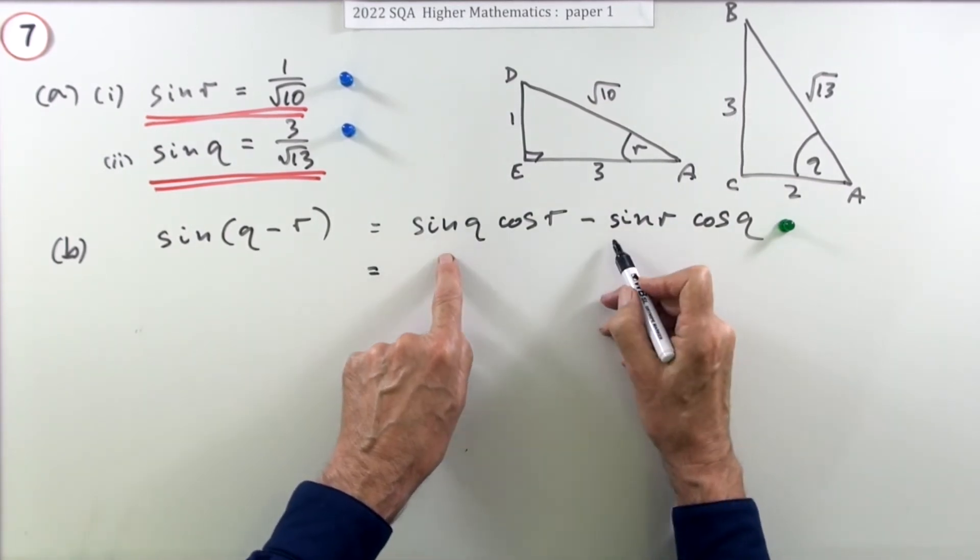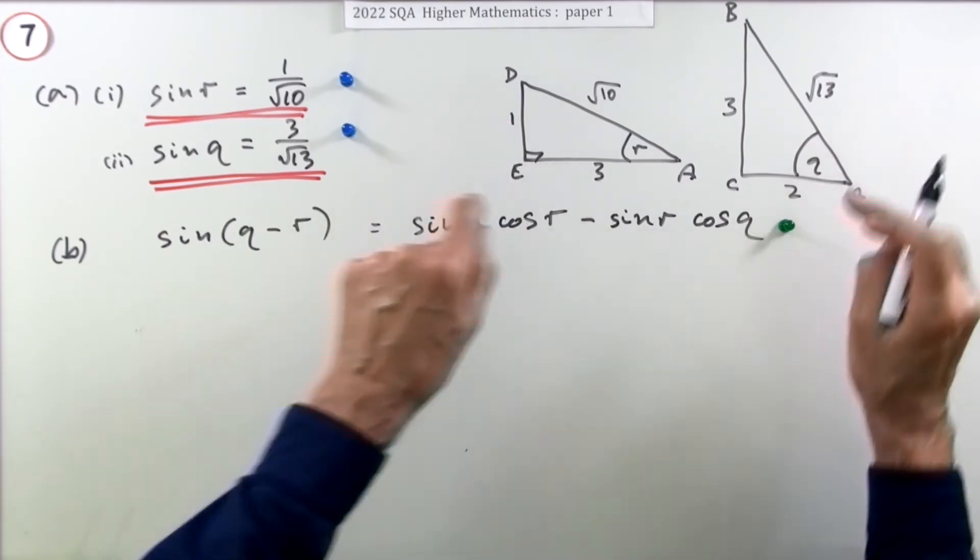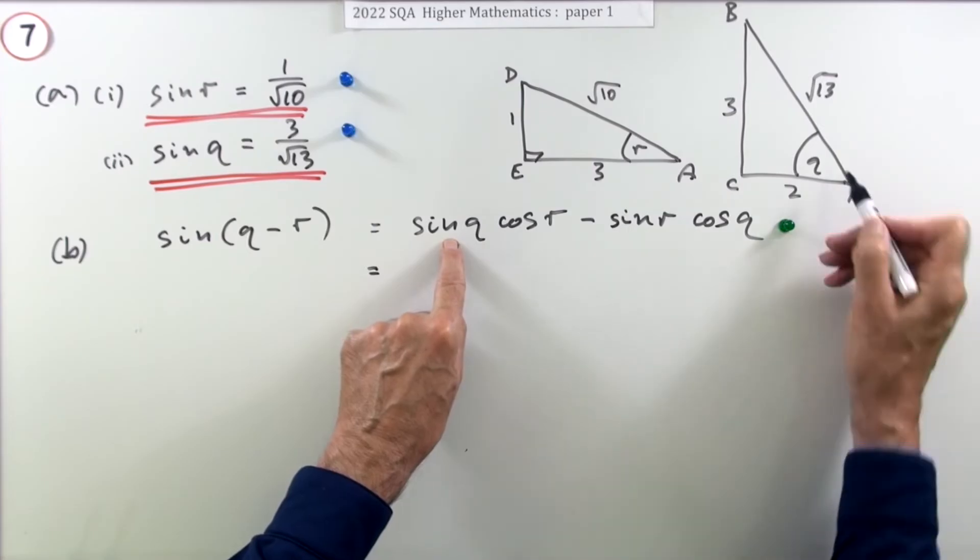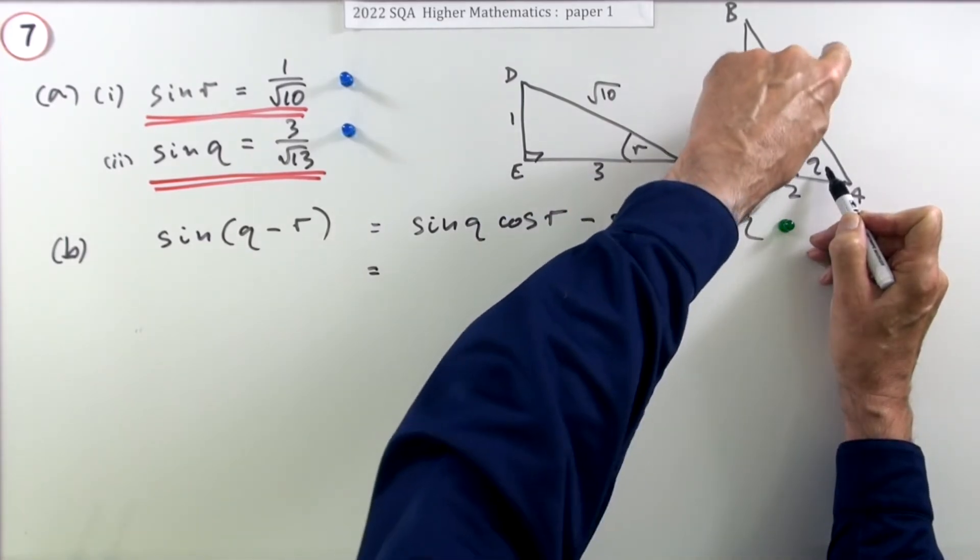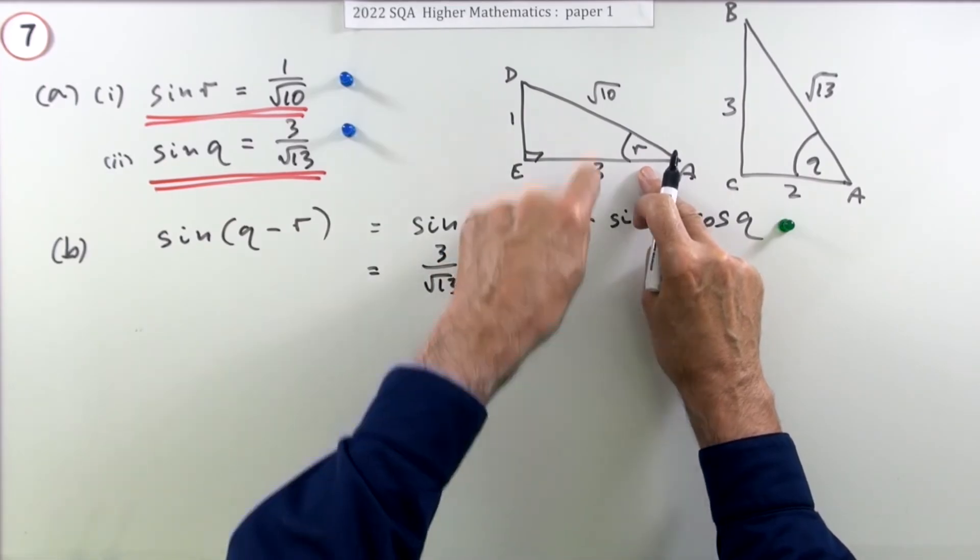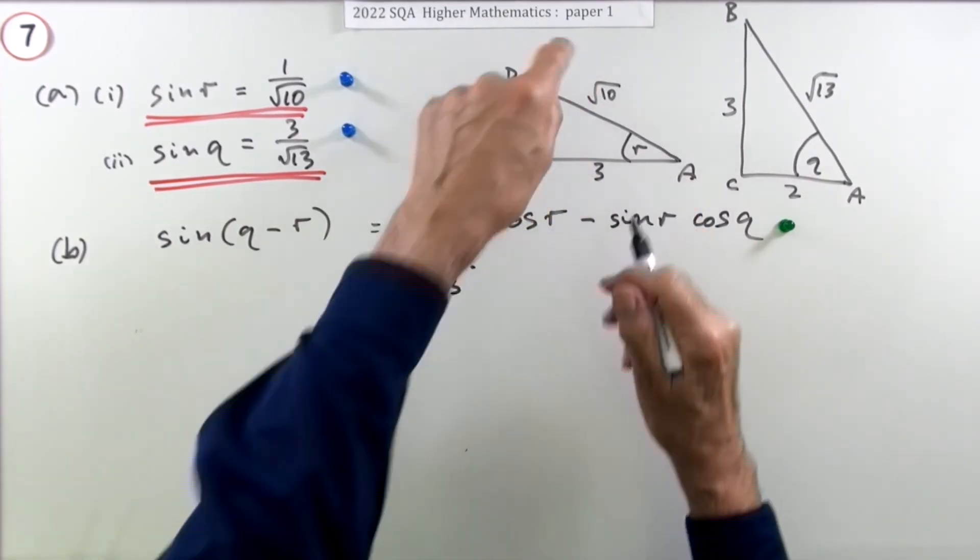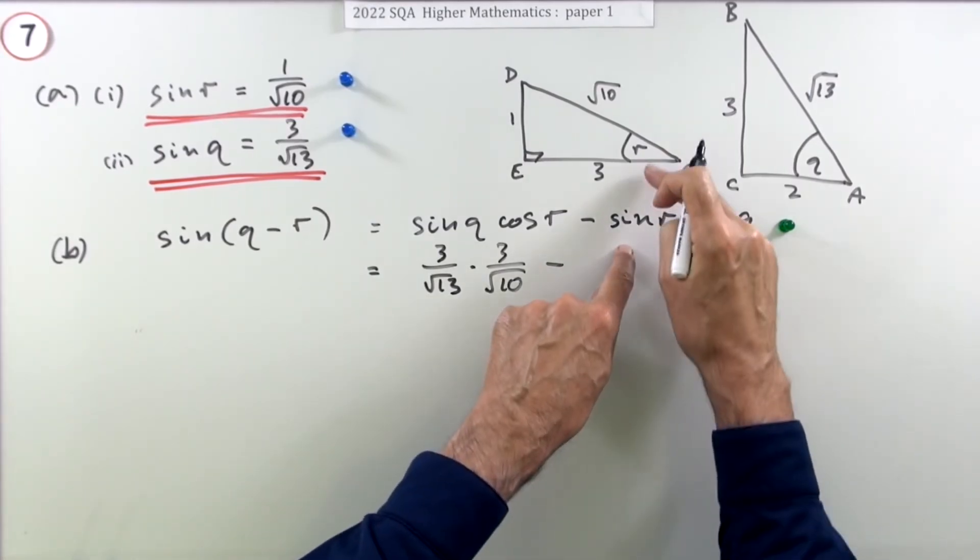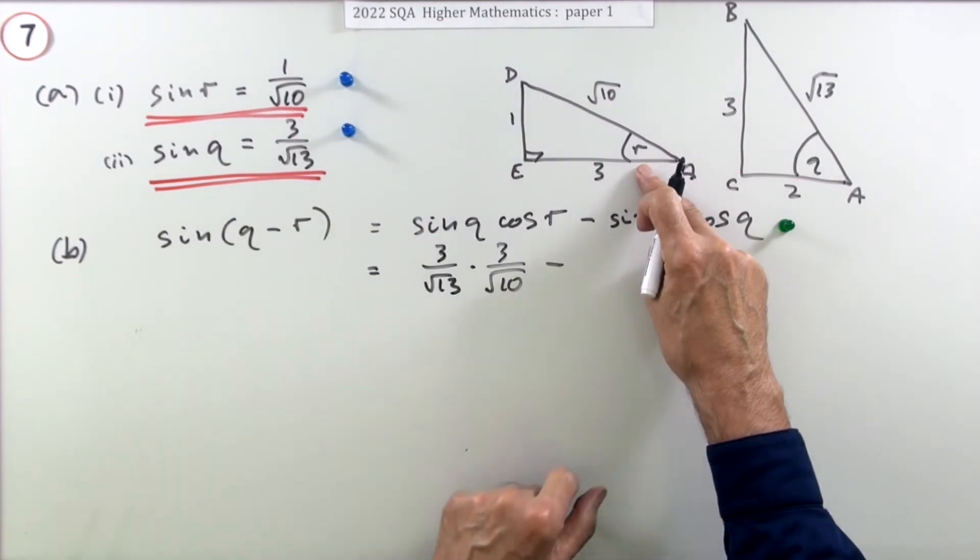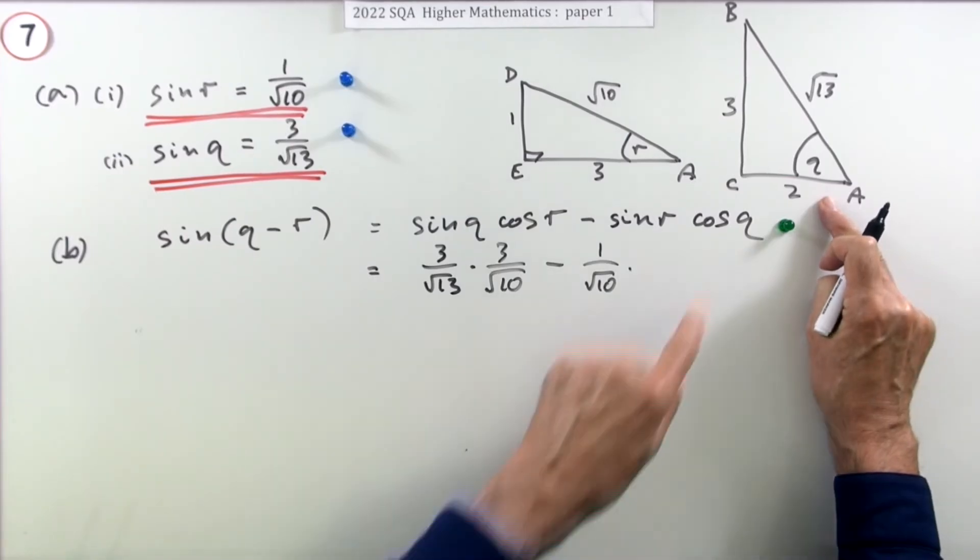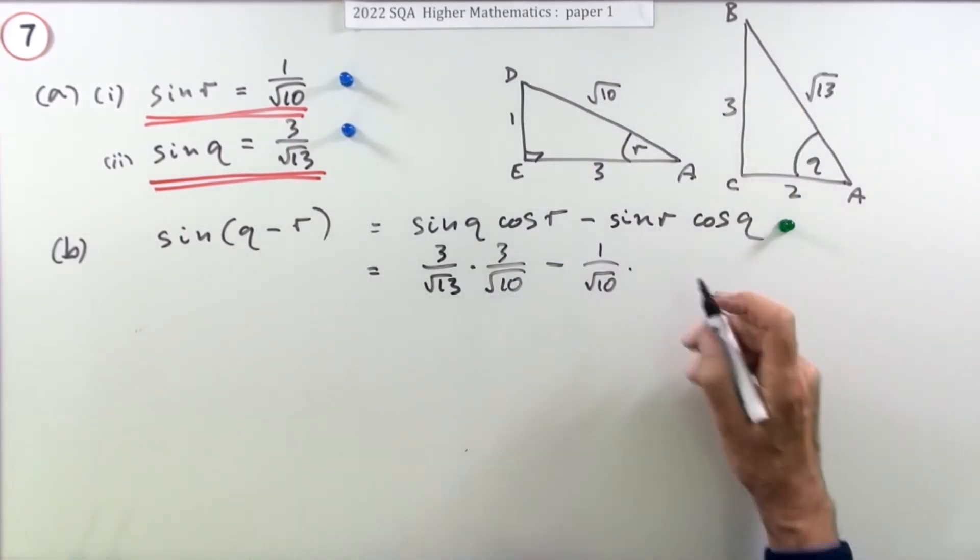You're probably safer taking it from the original diagram in case you made a mistake here. Just that'll give you a double check. So sine of Q, opposite over hypotenuse, 3 over root 13. Cos of R, adjacent over hypotenuse, 3 over root 10. Minus sine of R, opposite over hypotenuse, 1 over root 10. Cos of Q, 2 adjacent over hypotenuse, 2 over root 13.